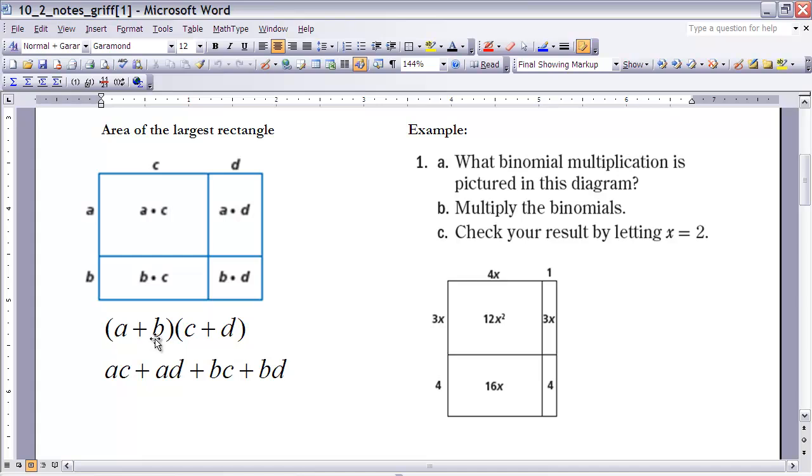And if the width is, if this width is C and this is D, then the width of the entire rectangle would be C plus D. Now let's be careful because a lot of times when I write it like this, people want to say that the distance here is A times B. It's not, it's the sum of those two distances. So it's A plus B and the same thing up here.